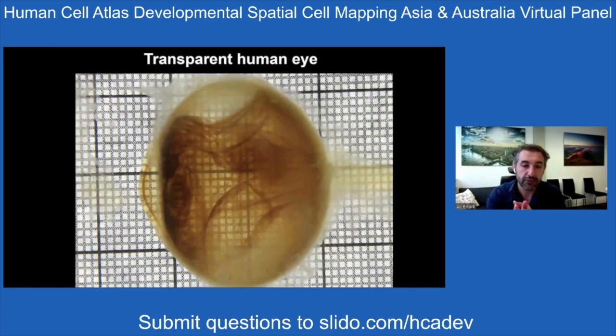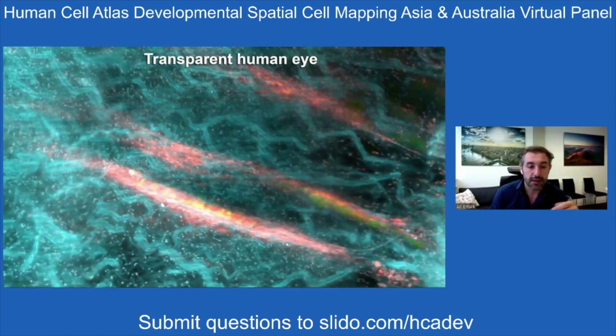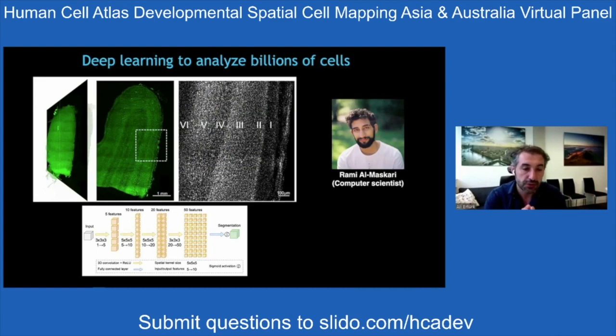Using this, we can make a whole human eye fully transparent and examine cellular details — the retina, iris, and behind the eye, including nerves and immune cells. We also use deep learning to quantify such large human tissue images, developing algorithms that can segment and quantify hundreds of millions and billions of cells in human brain.